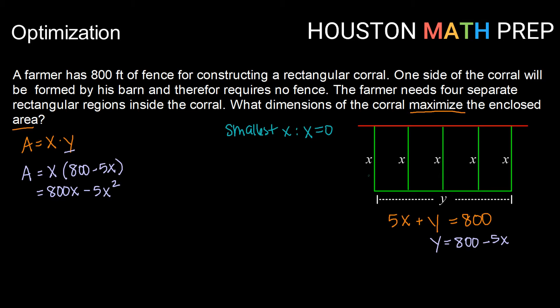We could have no length here. And then y would just extend for 800 feet. Obviously, that doesn't make a whole lot of sense in terms of actually building a corral. But we're just getting end points here. The largest x could be, would be if y were very, very small. So if we took our constraint function here,